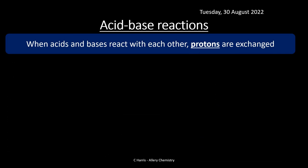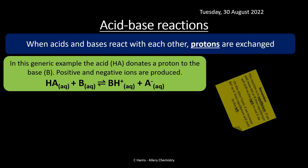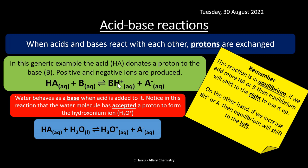Still sticking with acid-base reactions — because a lot of these reactions are equilibria, that's why they fit into this topic. When they react with each other, protons are exchanged. In this generic example, HA donates the proton to B, producing positive and negative ions. This is an equilibrium reaction. If we add more HA or B, equilibrium will shift to the right to use it up, and vice versa — if we add more products, equilibrium will shift to the left. This is based on Le Chatelier's principle.